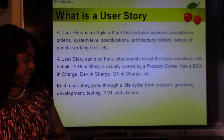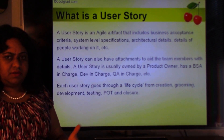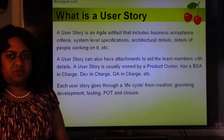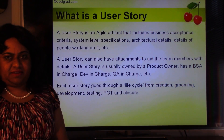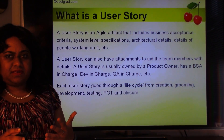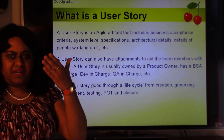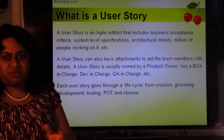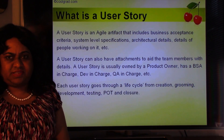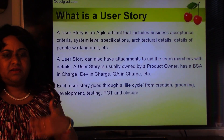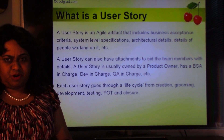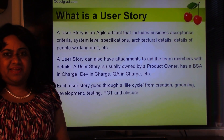Each user story goes through a lifecycle: creation, grooming, development, testing, product owner testing, and then closure. First the product owner creates it. In the grooming phase, we populate all the details and make it ready for development to be picked up in a sprint. Once in the sprint, the developer codes what's in the story, then it goes through testing, then product owner testing or UAT, and then it's closed out at the end of the sprint.